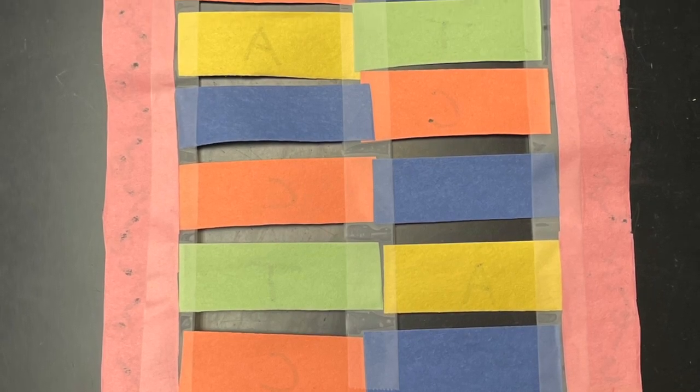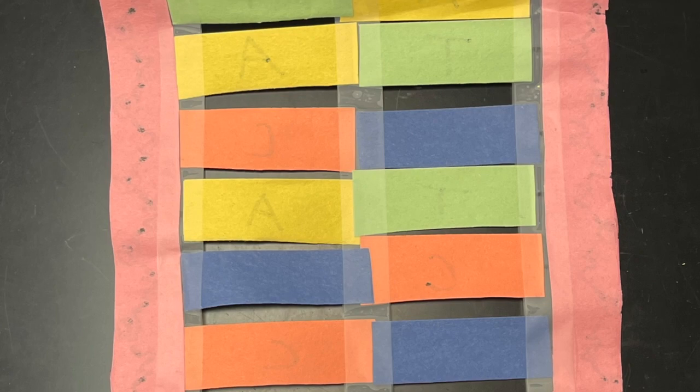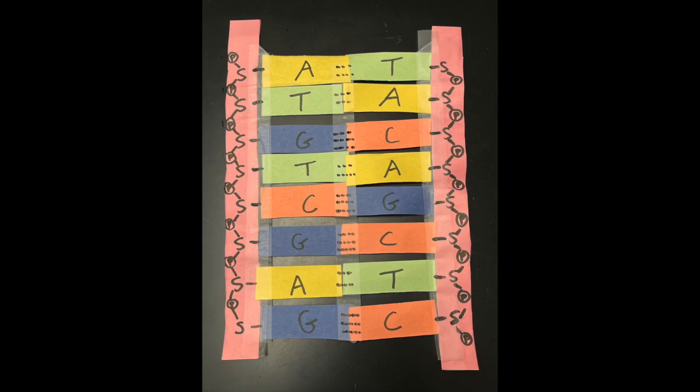Next, flip your model over and tape the other side because just the way this model works out, there's going to be some sticky parts which we want to get rid of. And then flip it to the correct side again, the starting side.